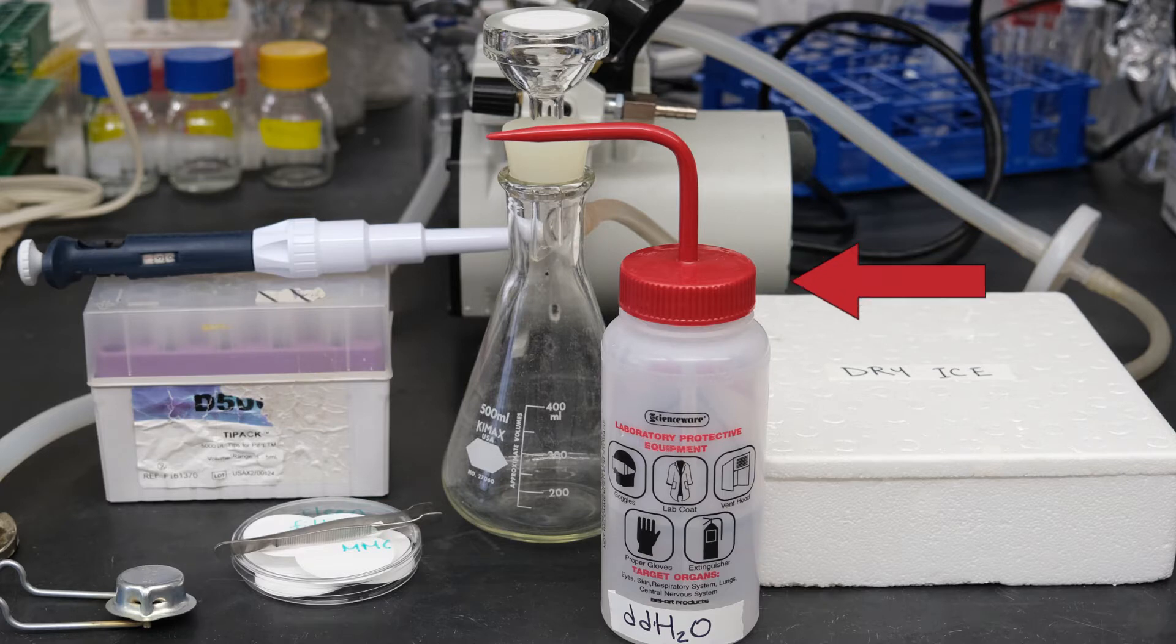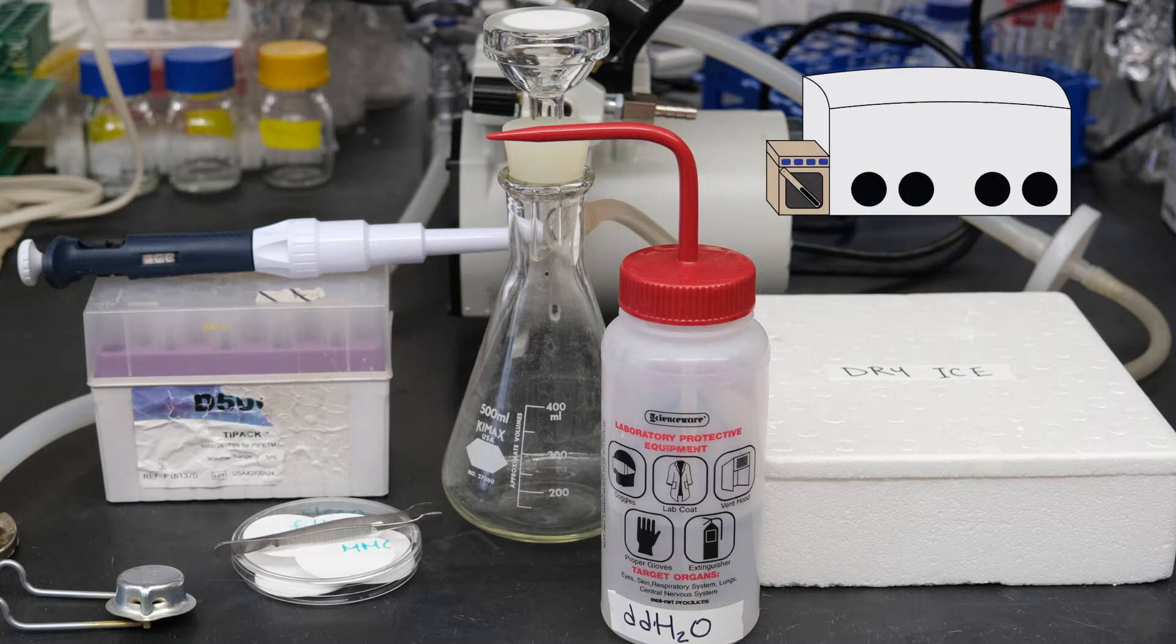You'll also need a squirt bottle full of deionized water, your cooler full of dry ice or a minus 80 celsius aluminum block that holds your chilled solvent in small petri dishes. Do not use dry ice if you're doing extractions in an anaerobic chamber because it releases CO2 into that chamber, which you don't want.